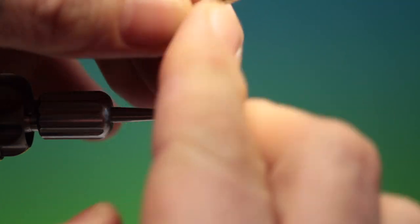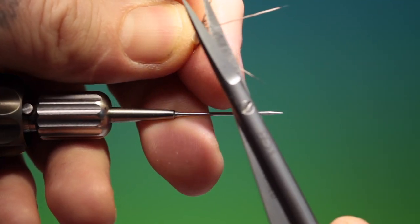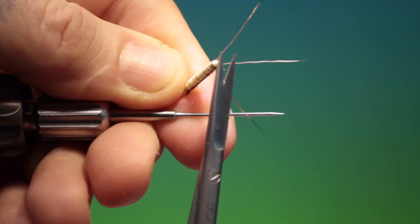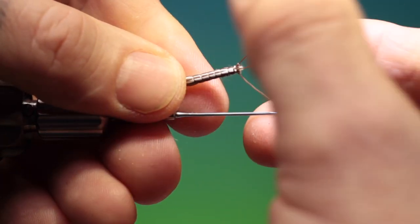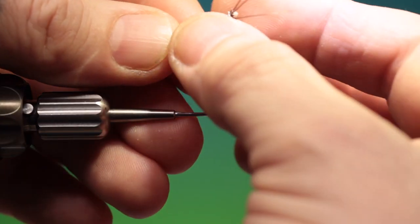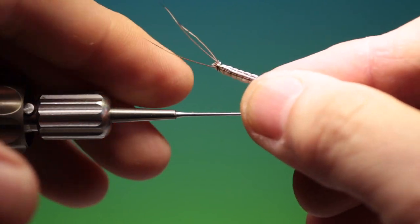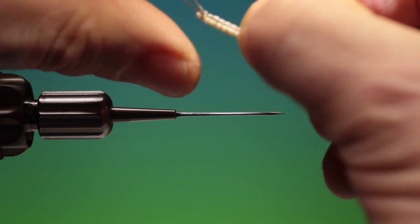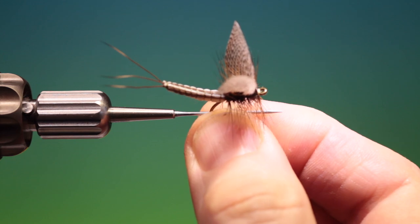So what we can do now is just trim off, you can see that there, the rest of the hair there, stubs. You can put a little drop of varnish on there if you wish but I don't find it necessary. And there you have the beautiful detached body.